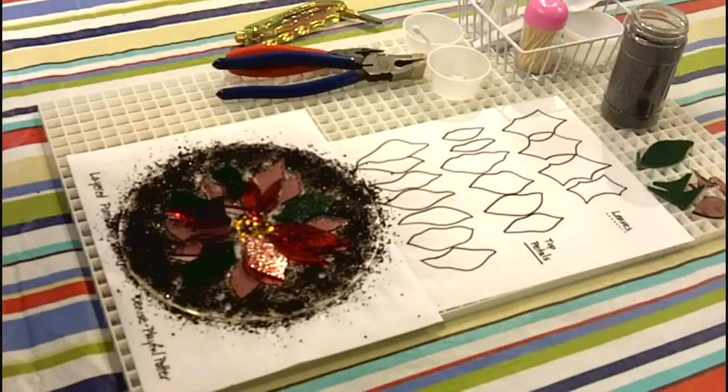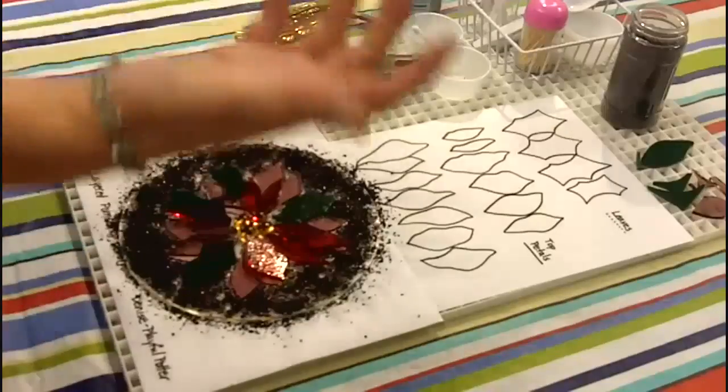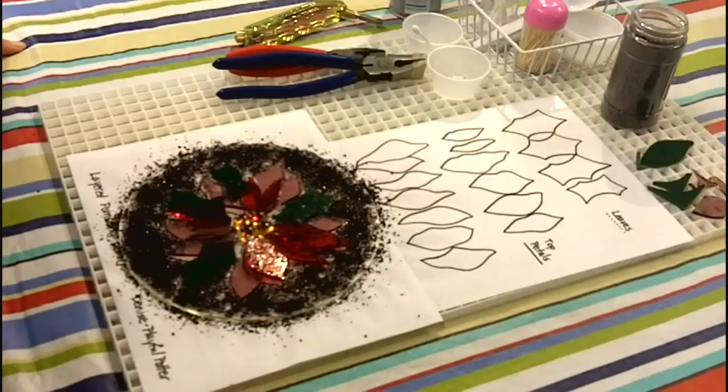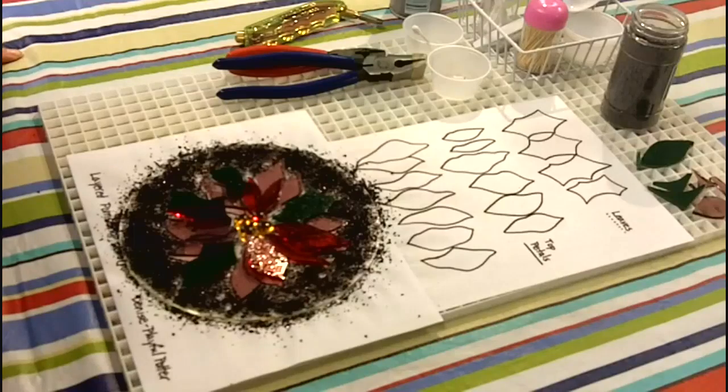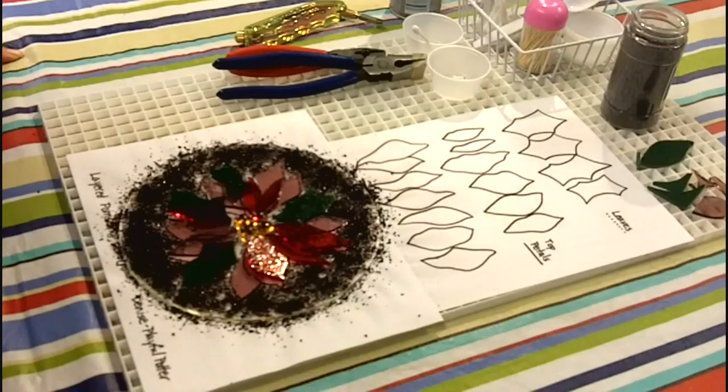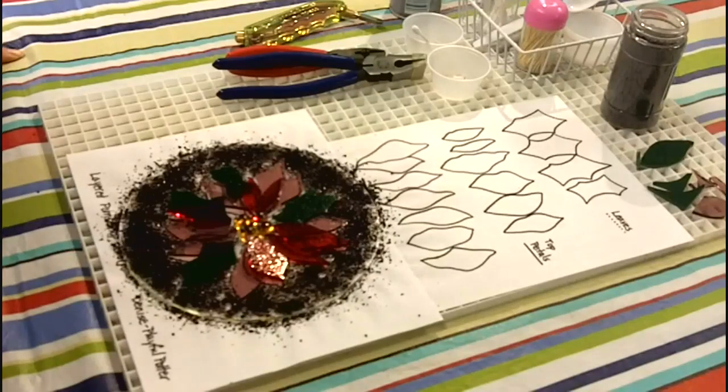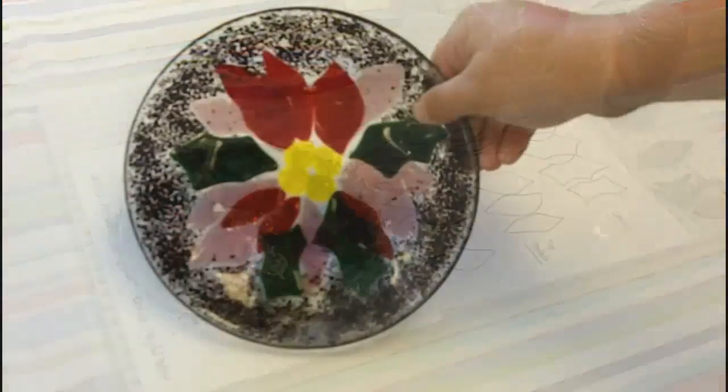Now your piece is all ready to dry. Once it's dry, you just pick it up and put it in the kiln. Again, you can fire this piece to a full fuse, a contour fuse, or a tack fuse, depending on what you're looking for. This is a really fun project, especially for customers who've done a little bit of glass cutting before. It turns out to a beautiful, beautiful dish.